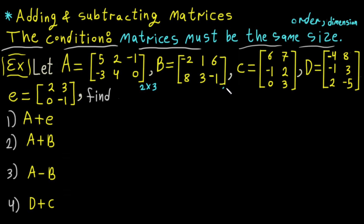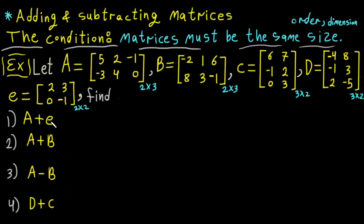Here the size of this matrix is two by three, this one is three by two, this one is three by two, and this one is two by two. So it is very obvious we can only do adding and subtracting for these two matrices that share the same size, but this one we can't add or subtract with any of the others here.